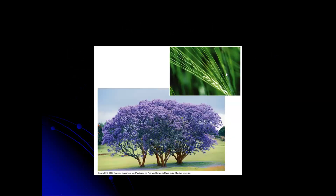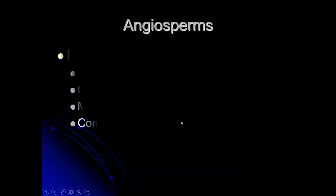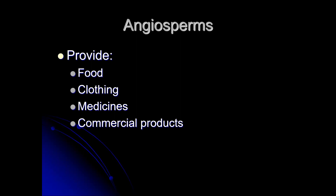An example of each of those: here is a monocot, a grass — looks like probably wheat, maybe an oat — and a redbud tree. We depend a lot on angiosperms; they provide us food, clothing, medicines, and commercial products. This is where the bulk of our dependence upon plants really comes into play. Almost all of the plants that we have domesticated for cultivation are angiosperms.